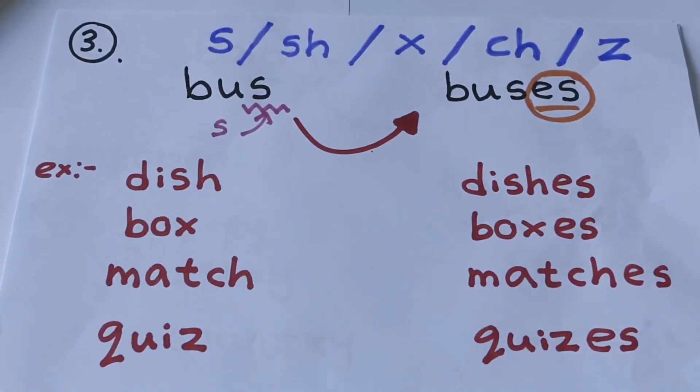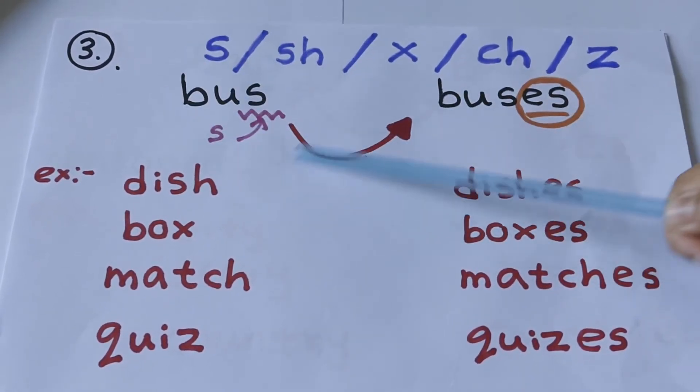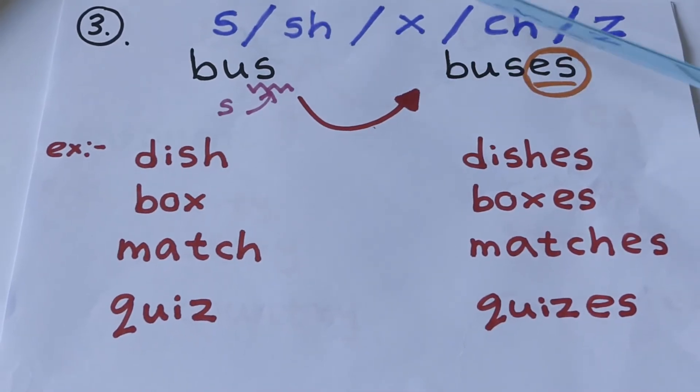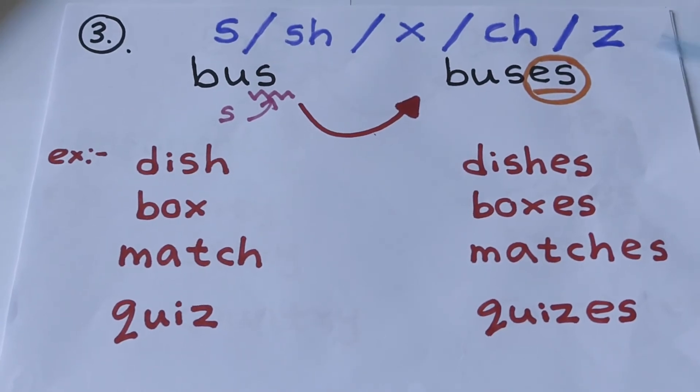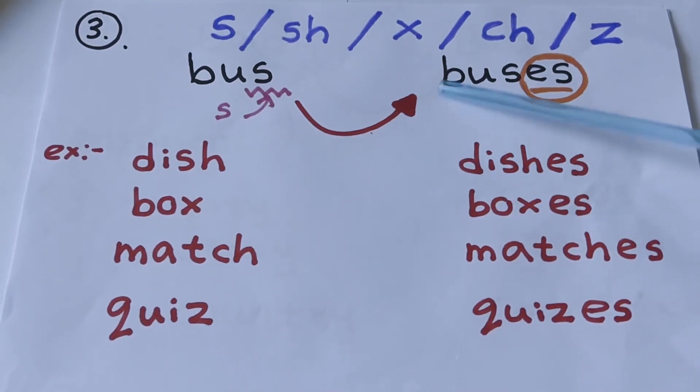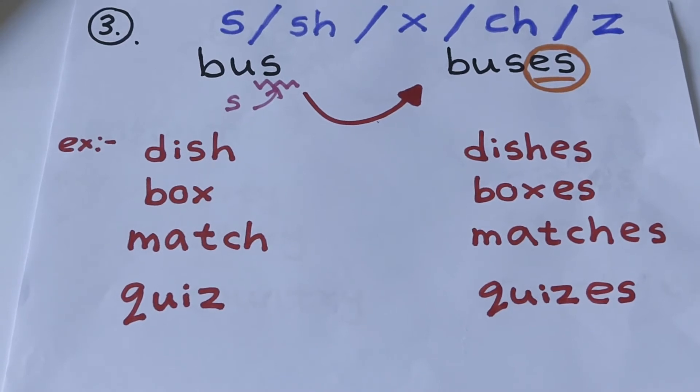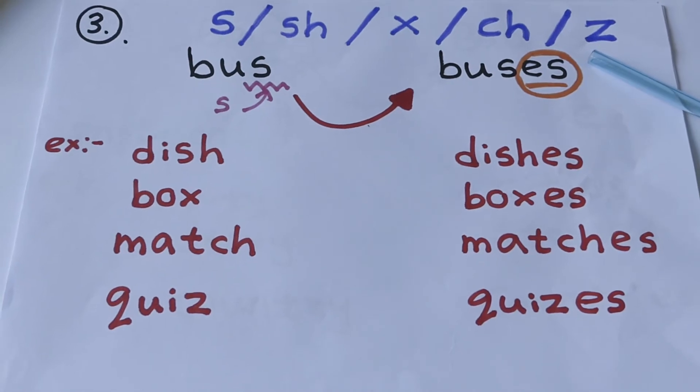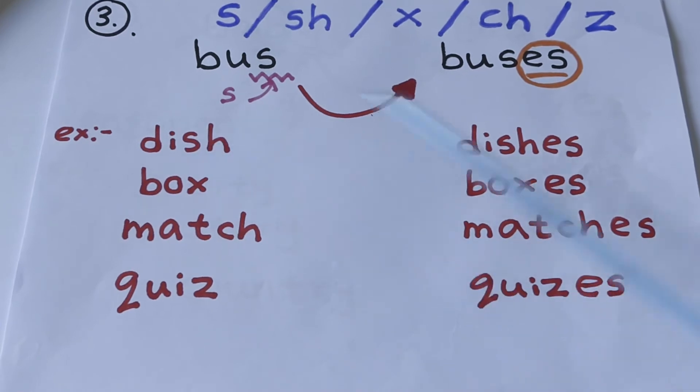Let's move to the third rule. What is the third rule? The last letters finish with S, SH, X, CH, and Z. Then we have to convert singular to plural by adding ES at the end of the word. Bus, buses. Examples: dish, dishes.